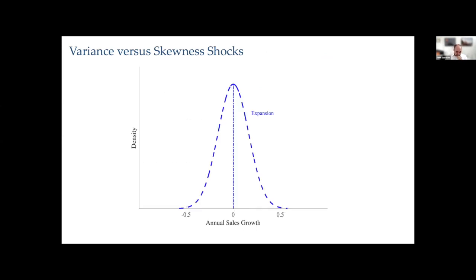To fix ideas, I want to make sure we are all on the same page about left-skewed, right-skewed, downside risk, and upside potential. Let's start with a histogram of a variable — say, annual sales growth — and suppose that in an expansion it is symmetric, so the skewness is zero.